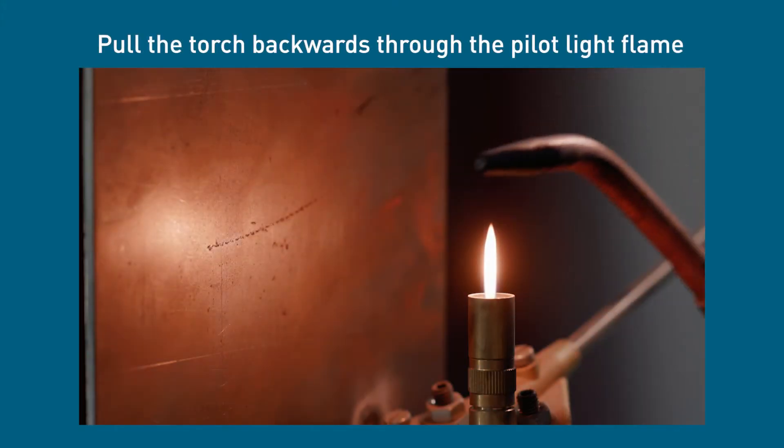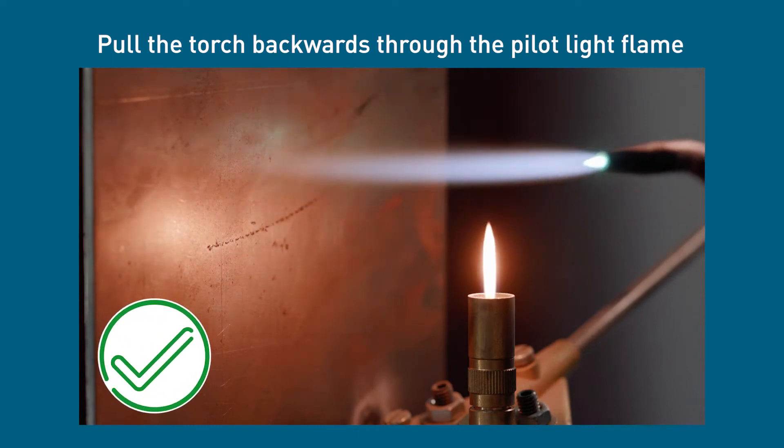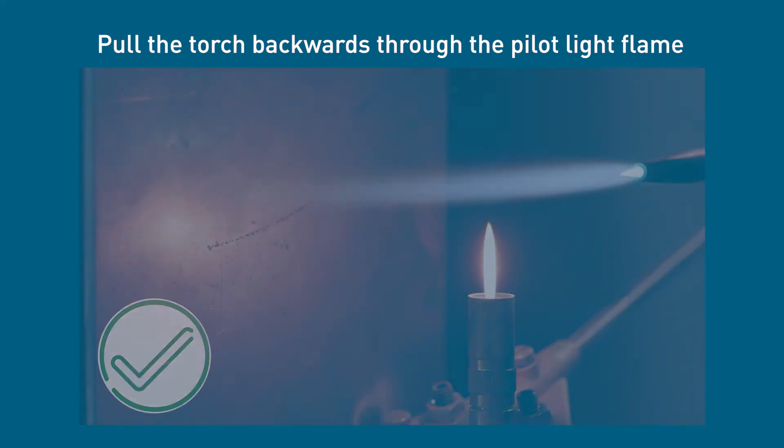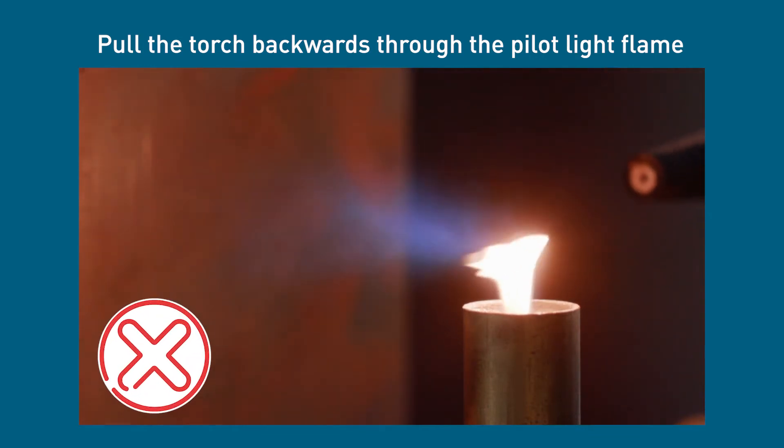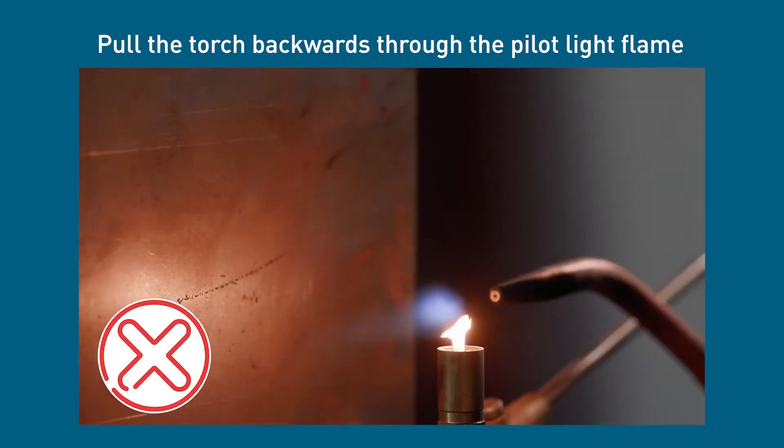It's important that the nozzle is pulled backwards. If the torch is pushed through the flame, the force of the gas pressure will attempt to extinguish the pilot light and the torch won't light properly.